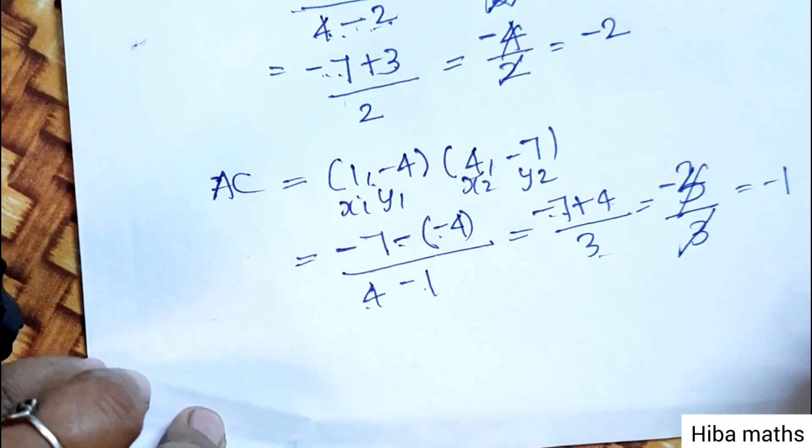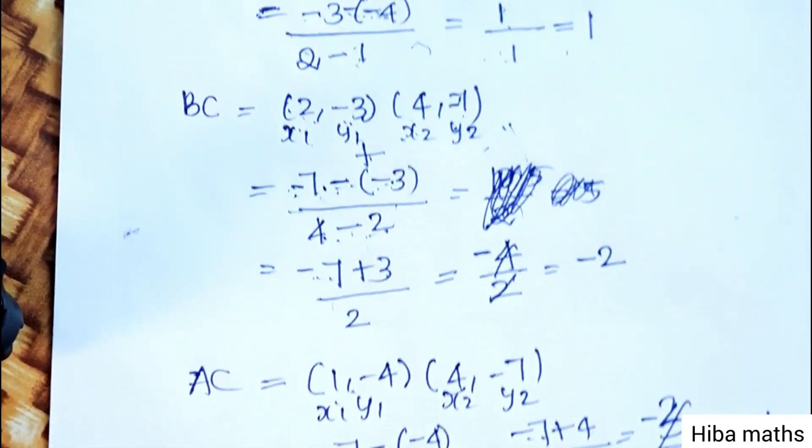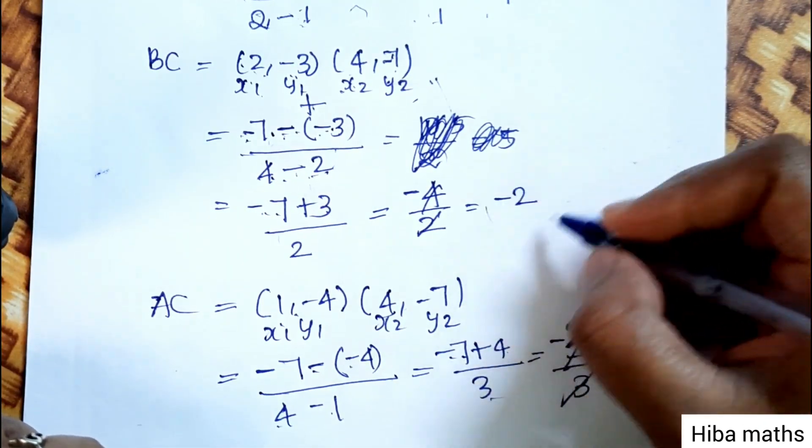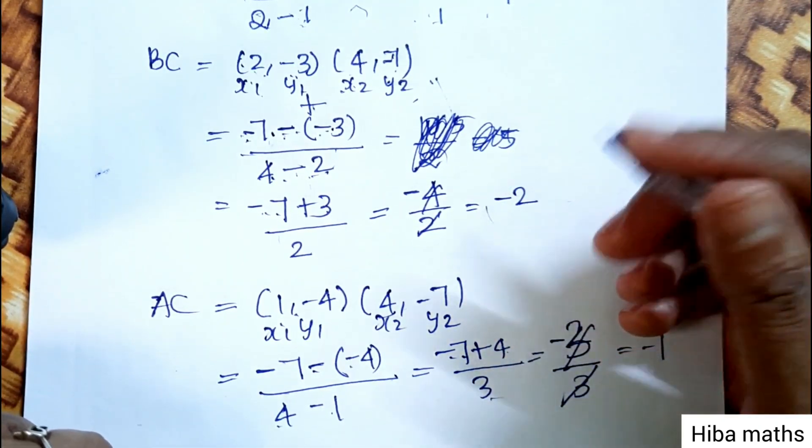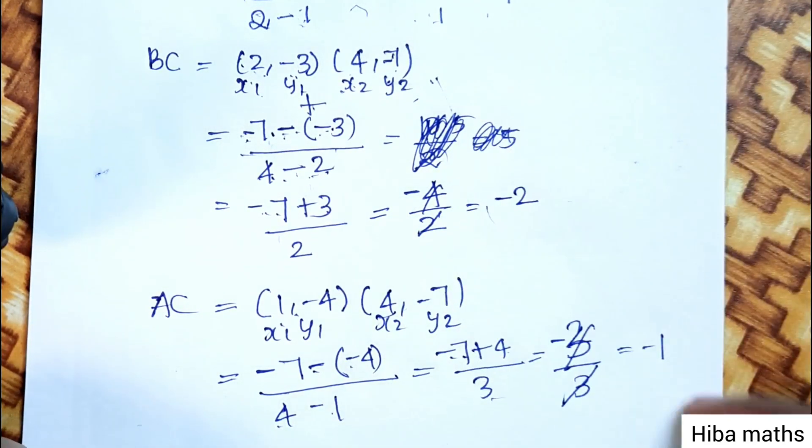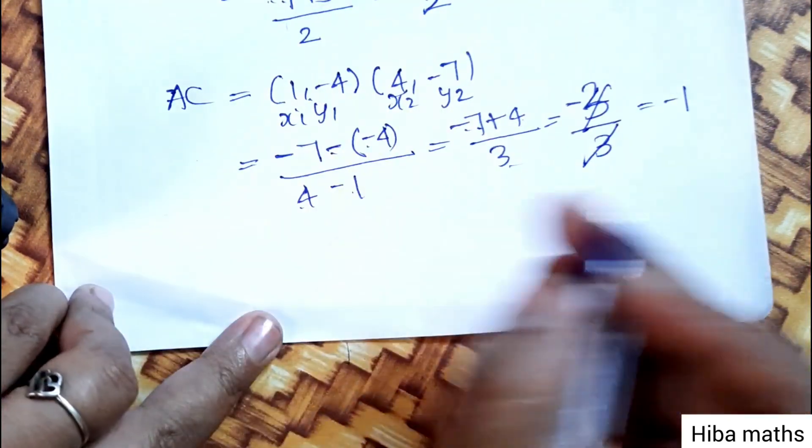3 divided by 3 cancels to get 1. AB is 1, BC is... The slope of AB is 1 into minus 1 equals minus 1.